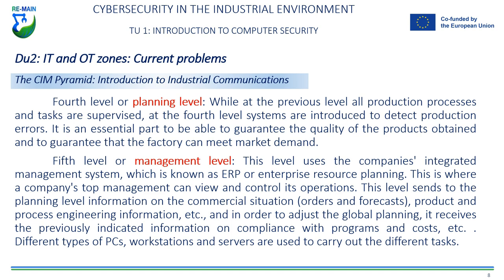Fifth level, or management level. This level uses the integrated management system of companies, known as ERP or Enterprise Resource Planning. This is where a company's senior management can view and control its operations. This level sends information to the planning level about the commercial situation, orders and forecasts, product and process engineering information, and receives information about program compliance and costs. To carry out the different tasks, PCs, workstations and servers of different kinds are used.